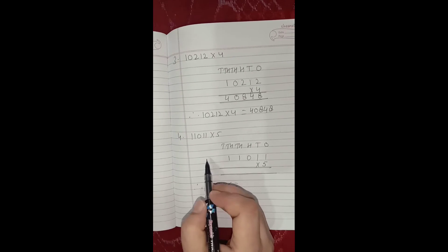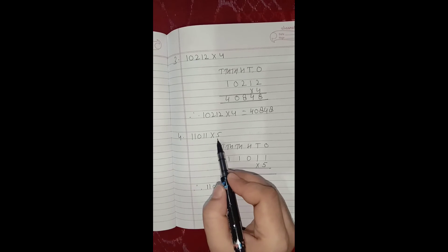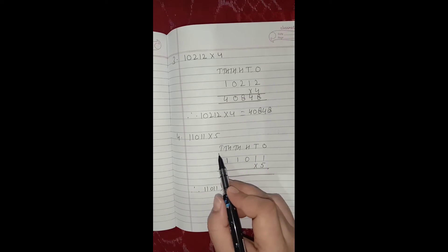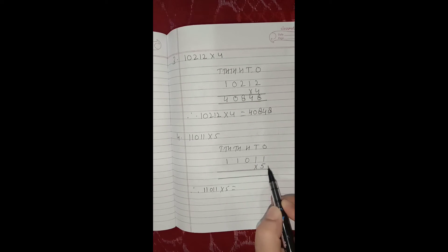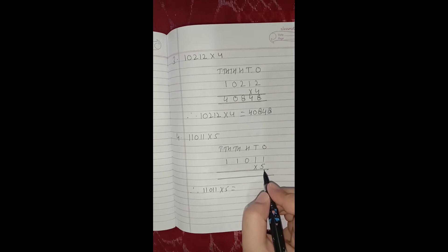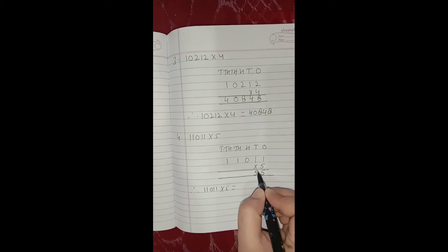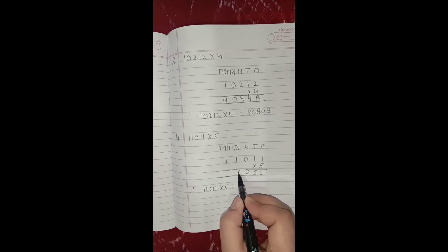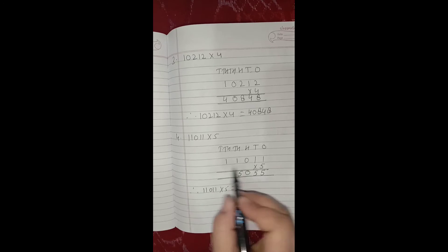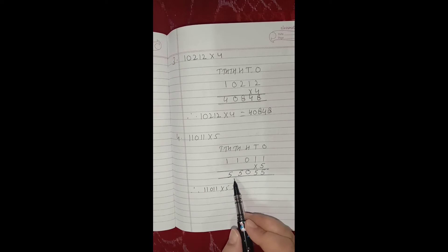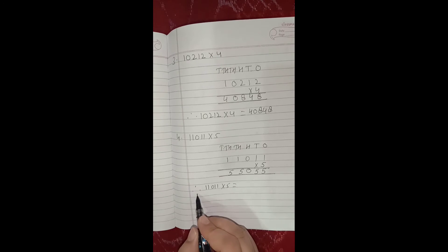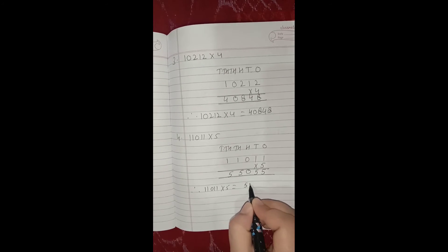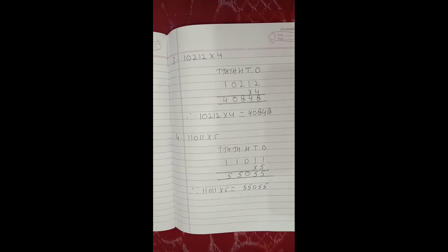Now let us move on to the next sum: 11,011 multiply by 5. Again first of all we will mention the places, then write the multiplicand, then multiplier, and after multiplication we will get the answer as product. So let us multiply the ones: 5 1's are 5. Then tens: 5 1's are 5. Then hundreds: 5 0's are 0. Now thousands: 5 1's are 5. And lastly 10,000: 5 1's are 5. So our answer is 55,055. Therefore 11,011 multiply by 5 is equal to 55,055.